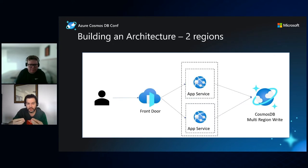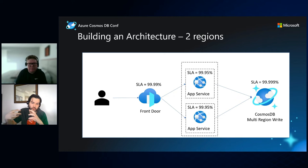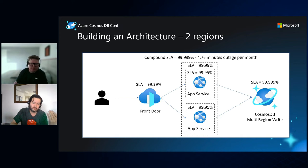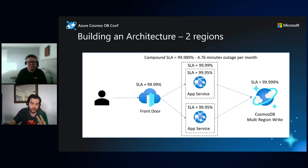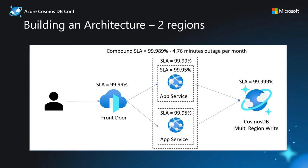To achieve a truly highly available solution, you need to add a second App Service as well, placing both App Service and Cosmos DB across multiple regions — ideally the same regions — with multi-write enabled on Cosmos DB. You'll also need Azure Front Door for load balancing and distribution. With this setup, the compound SLA approaches 99.99%, giving a maximum expected outage of just under five minutes per month, achievable with just two regions.